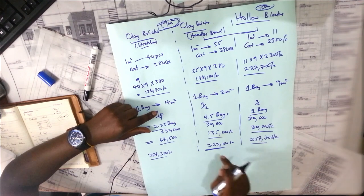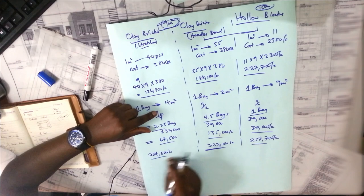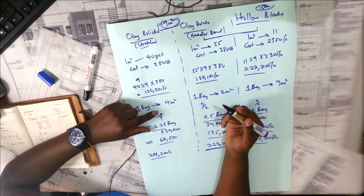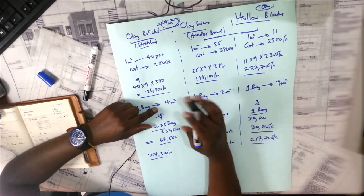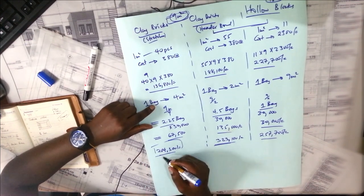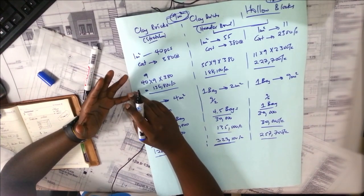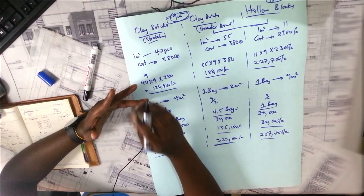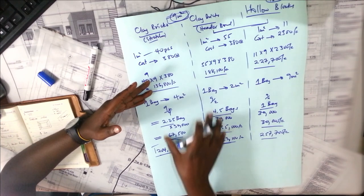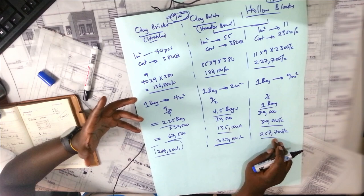From this calculation, hollow blocks are cheaper than clay bricks in header bond. Overall the cheapest so far is clay bricks in stretcher bond — which is what we mainly use for bungalow houses that are just a single ground floor. But remember, we've only considered material costs. If you factor in labor and the amount of cement used for plastering — since clay bricks have a lot of irregularities — the cost of those two columns will actually increase while hollow blocks decrease. Let's do an example with labor.